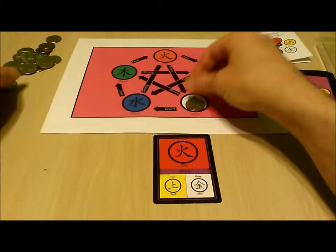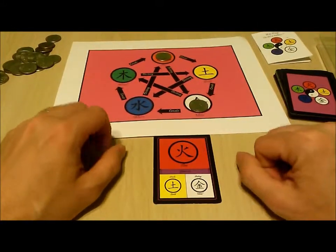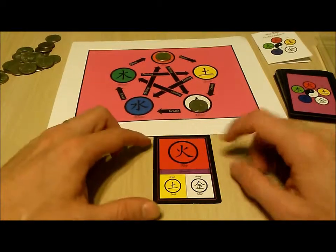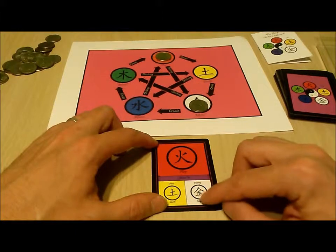As a final option, you can spend or remove a token from an element to remove a token from the destroyed element. So you can use a fire card to remove a token from the fire space and remove a token from the metal space.